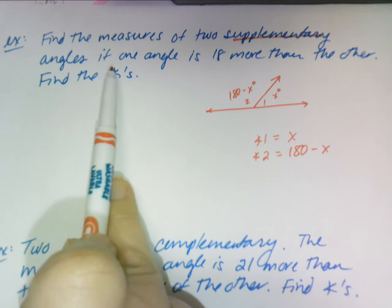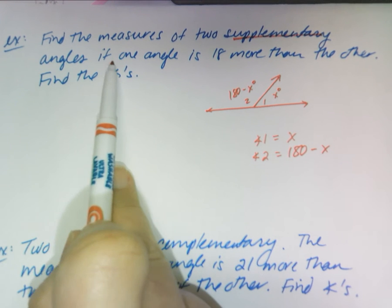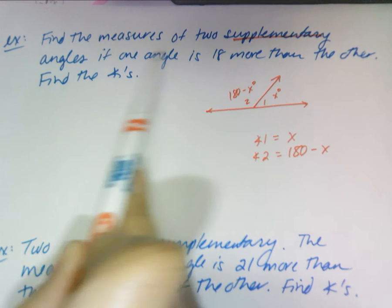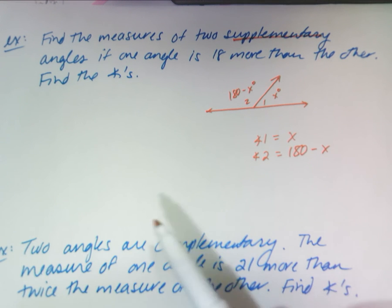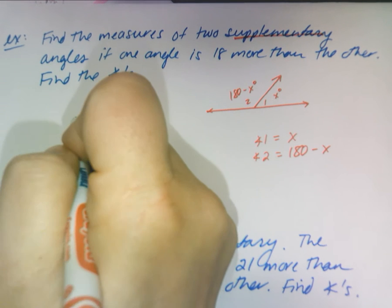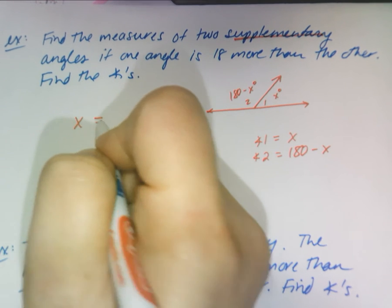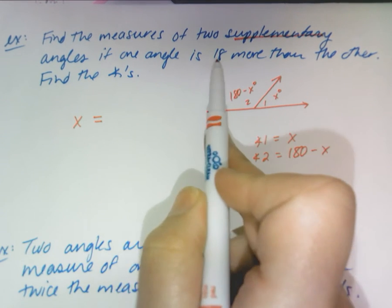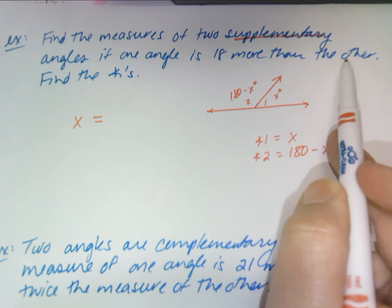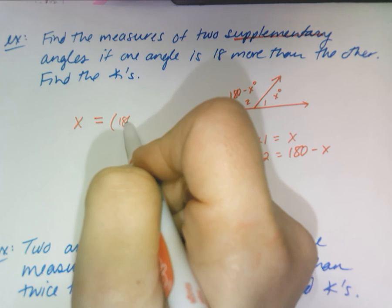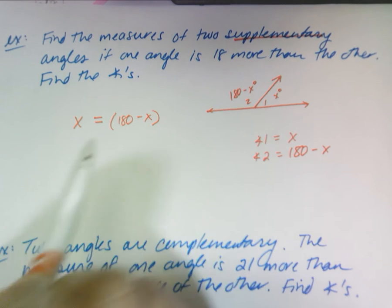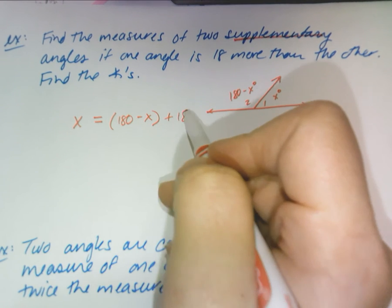Now let's read this last part here. Find the measures of two supplementary angles if one angle - so it doesn't matter which one you call it - I'll say X equals 18 more than the other. 18 more than that guy. How do you write that? Well, 180 minus X is the other angle and you want 18 more than that.